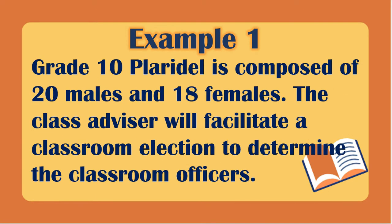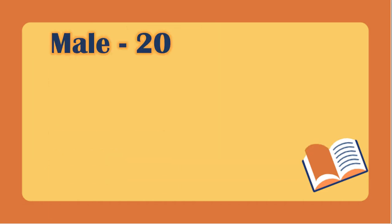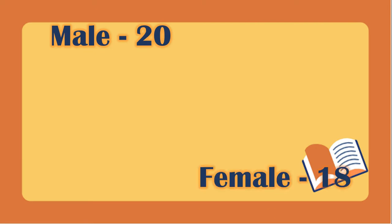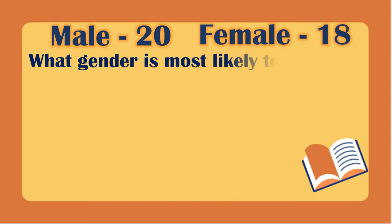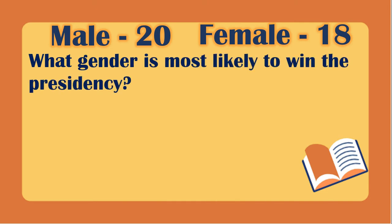Example 1: Grade 10 Plaridel is composed of 20 males and 18 females. The class advisor will facilitate a classroom election to determine the classroom officers. What is the gender most likely to win the presidency? It is likely male, because there are more males than females.